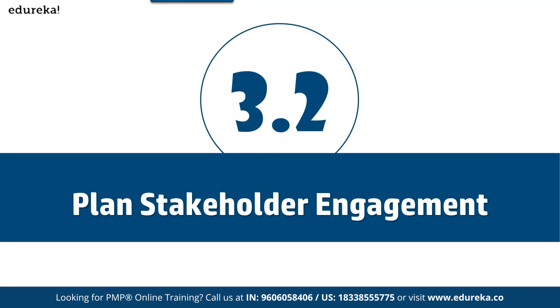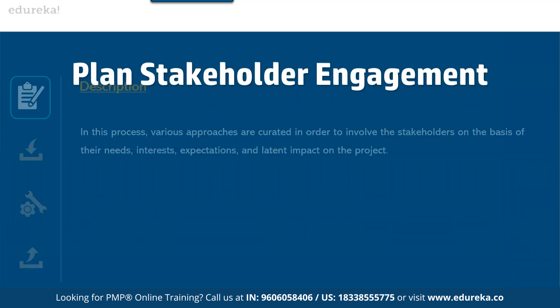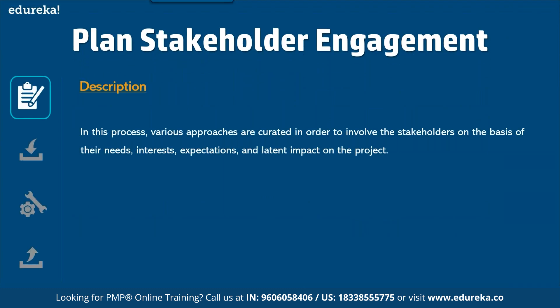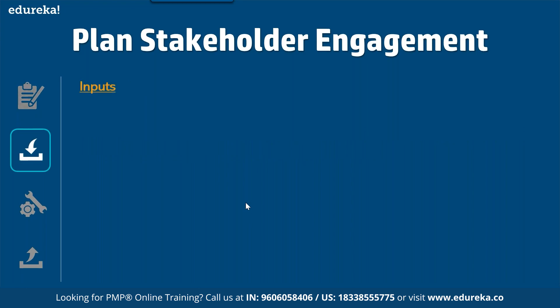Now let's talk about plan stakeholder management. In this process, we use various approaches to have an effective management plan. This is performed at periodic intervals throughout the project life cycle, which helps in developing a realistic plan that can effectively interact with stakeholders. In this case, we also have six inputs — let's talk about them one by one.